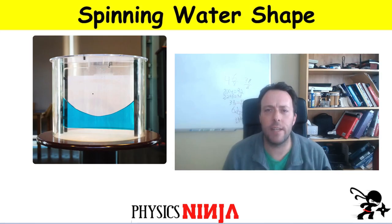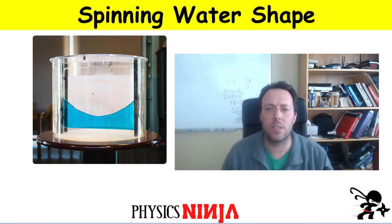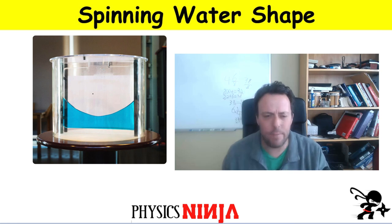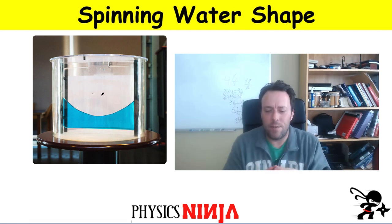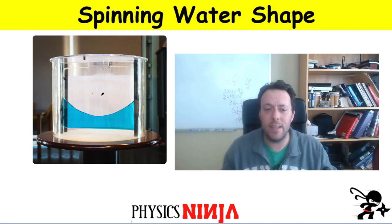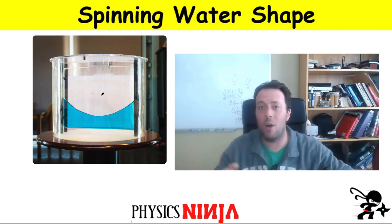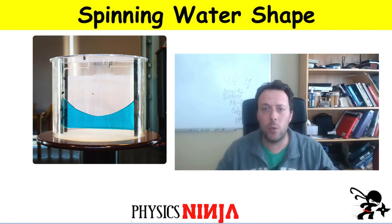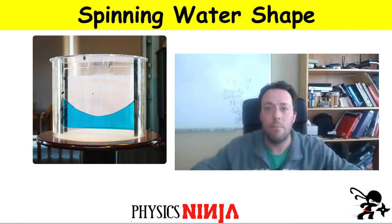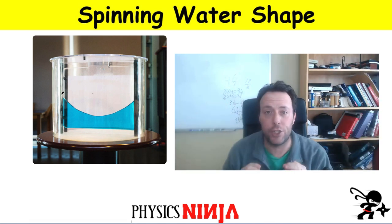Hi everybody, Physics Ninja here. Today what I want to do is look at the spinning water bucket problem. If you've been to a natural science museum, it might look like the image I've described here. If you ever see a setup like this of color-filled fluid inside a container sitting on a rotating platform, go ahead and give it a spin. What you're going to notice is that the fluid doesn't stay flat but instead takes on this very well-defined shape.